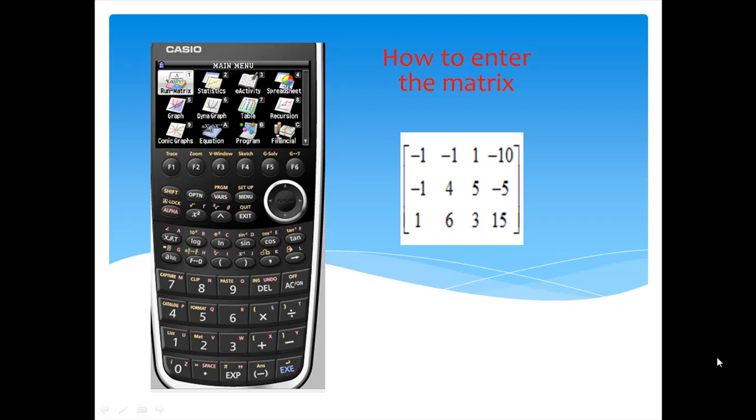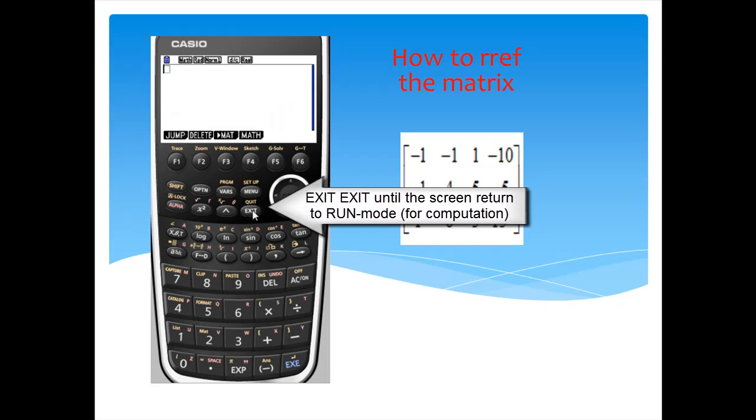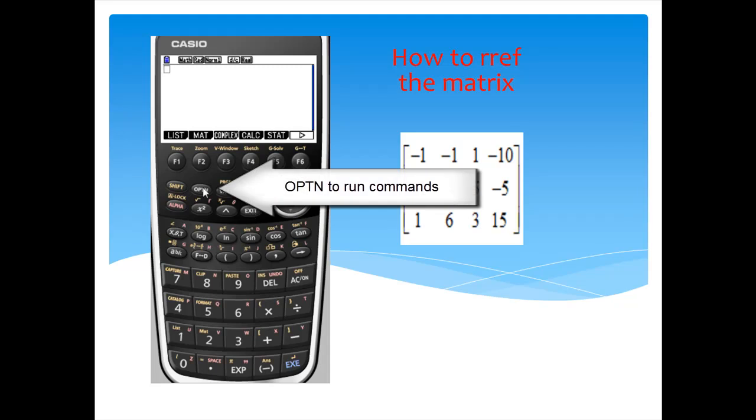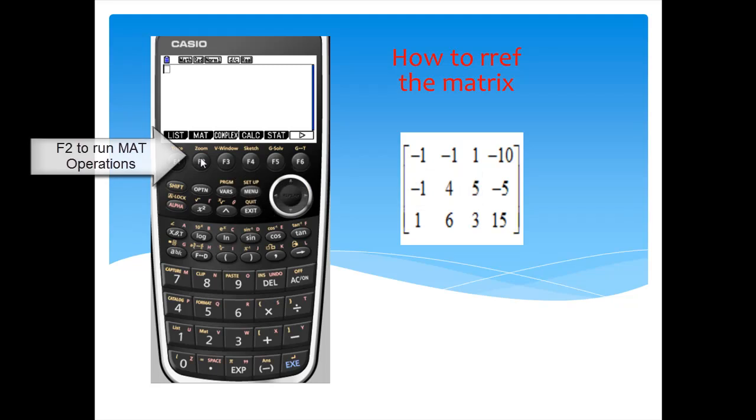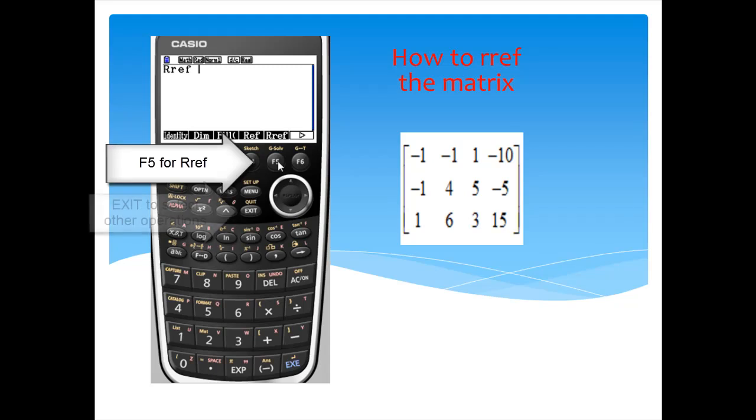This is how you enter the matrix into CG20. After you have entered matrix A, press EXIT to get out and exit twice. Now you are in the run mode. Select OPTN for operation, select F2 for matrix, then F6 for more options. And then you see RREF there. Press F5.